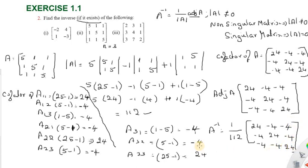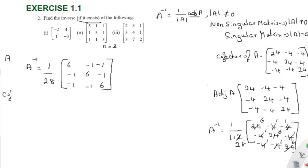Taking 1 divided by 112 into the adjoint matrix. We can factor out 4 from the adjoint matrix, giving entries 6, minus 1, minus 1, minus 1, 6, minus 1, minus 1, minus 1, 6. So the final answer for A inverse is 1 by 28 times the matrix with 6, minus 1, minus 1 along rows.